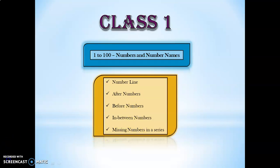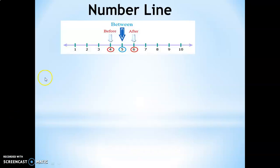So what is a number line? A number line can be defined as a straight line with numbers placed at equal distance. Number lines can be used to teach concepts like after numbers, before numbers, and between numbers. Also missing numbers in Class 1. But as children move to higher classes, number lines can be used to teach concepts like addition, subtraction, and division.